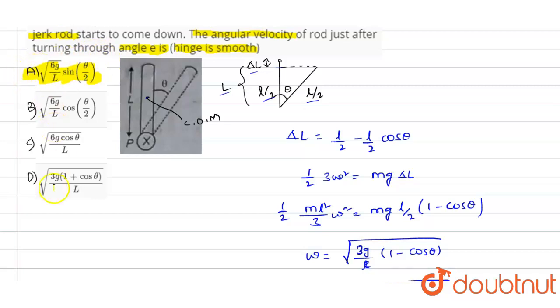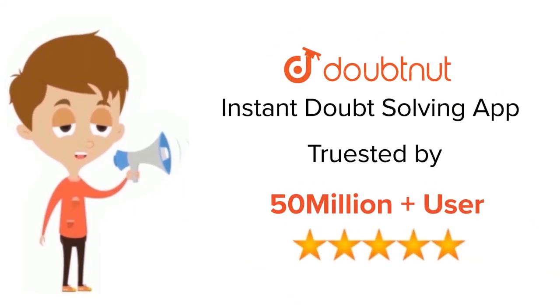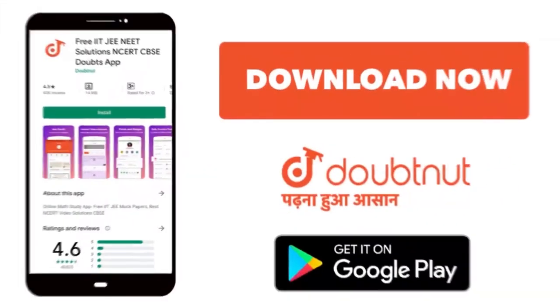So option A is the correct answer for this question. Thank you. For class 6 to 12, IIT-JEE and NEET level, trusted by more than 5 crore students, download DoubtNet app today.